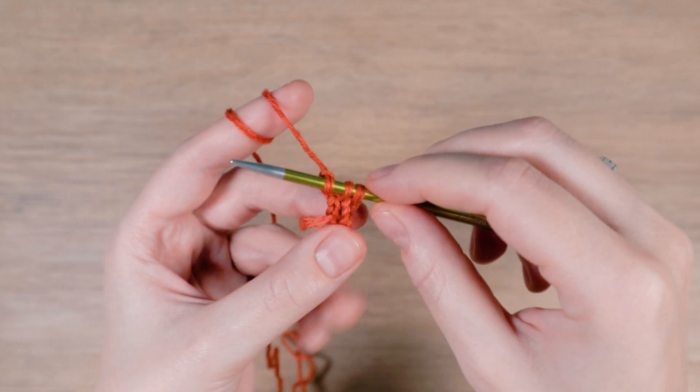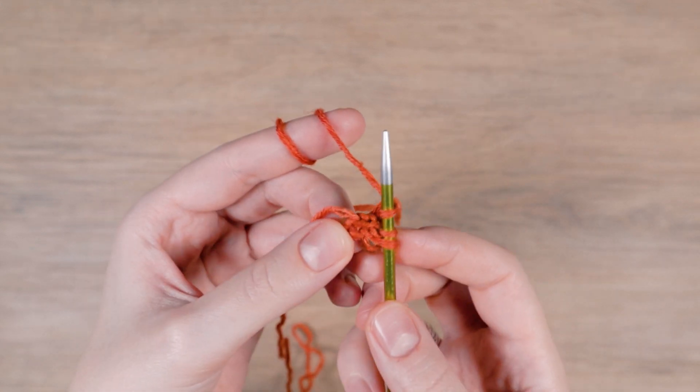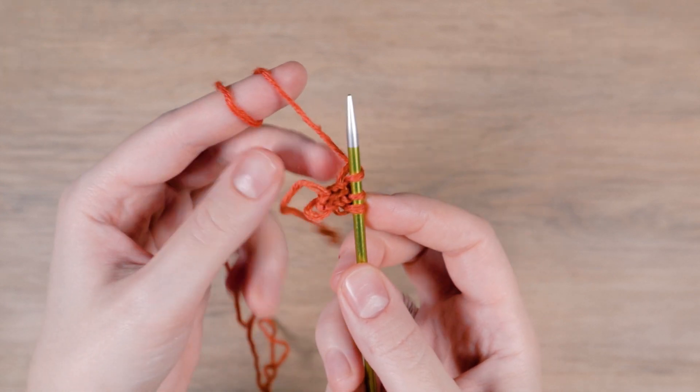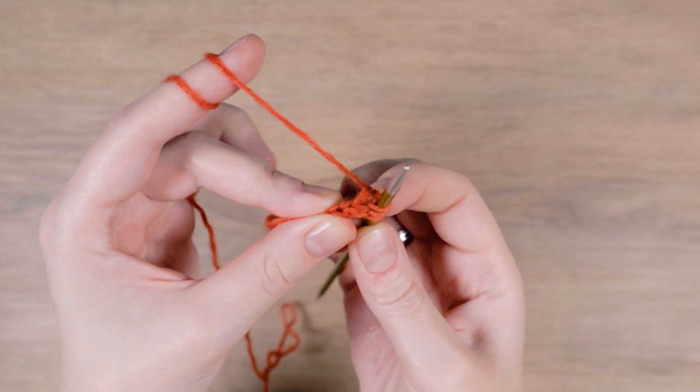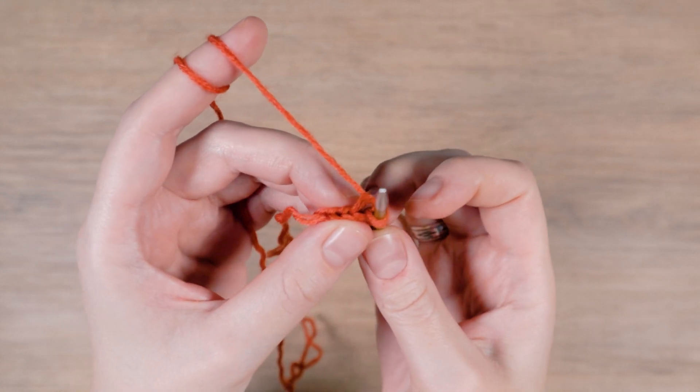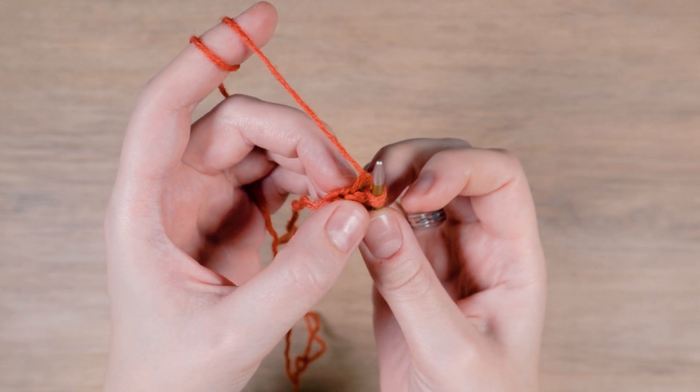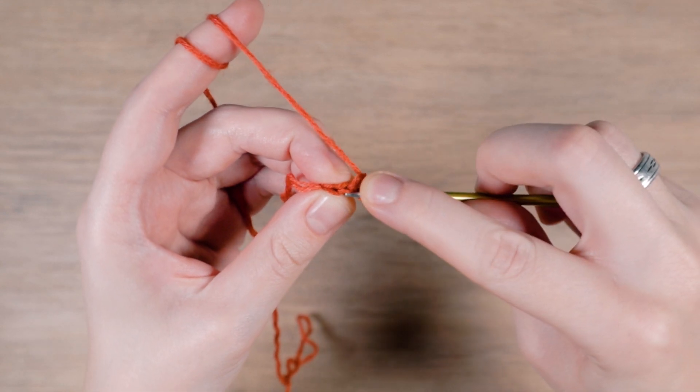After the last row turn the work 90 degrees so that the left side is up. Pick up one stitch along the side. Insert the needle under both strands of the stitch that is next to your current stitch and pull the yarn through.